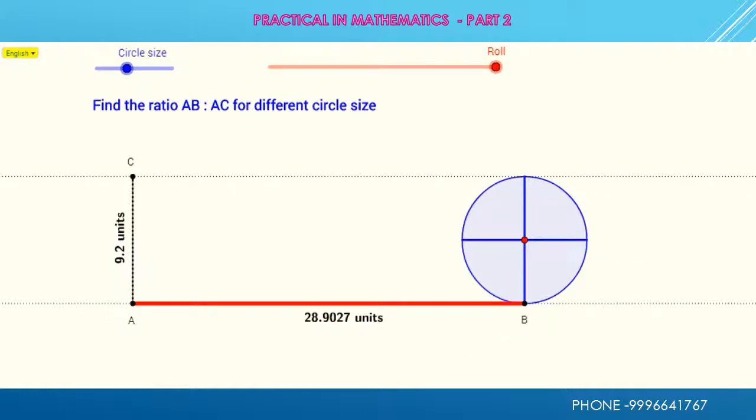So I write here this is perimeter of circle. On the other side, AC line - this is diameter of circle, because this circle totally fits in the line AC. Here I have P and here I have D.